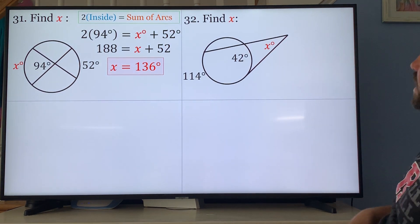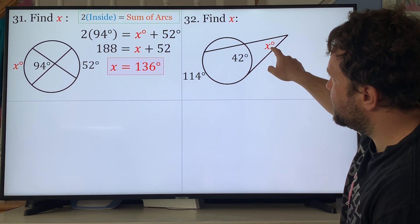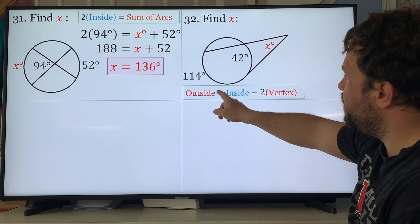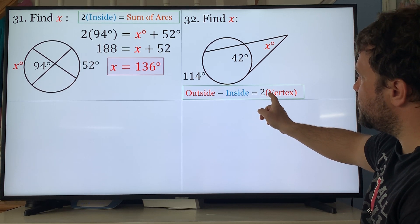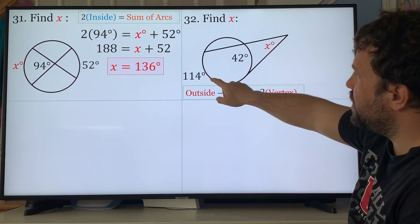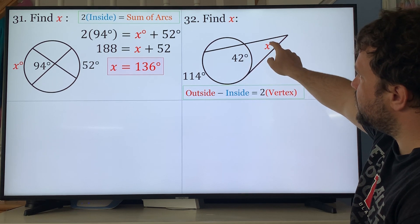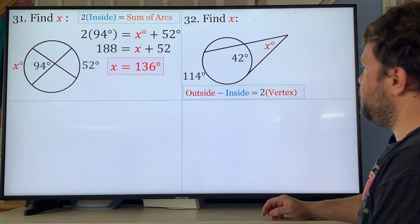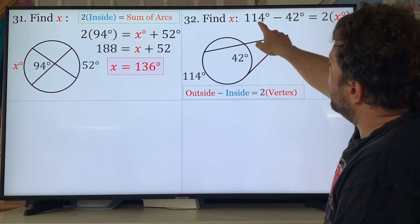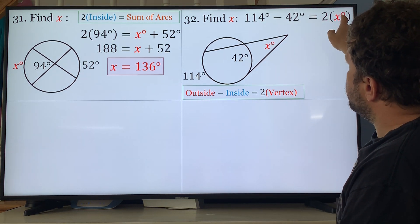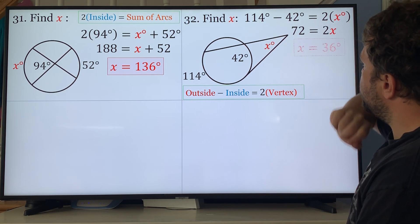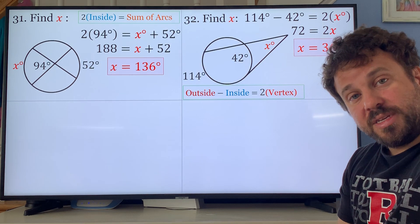Problem 32: find x. x equals half the difference. So the outside minus the inside equals two times the vertex outside, or this equals half of this minus this. You can write it either way as I told you earlier. So 114 minus 42 equals two times x. 72 equals 2x, divided by 2 and x equals 36.